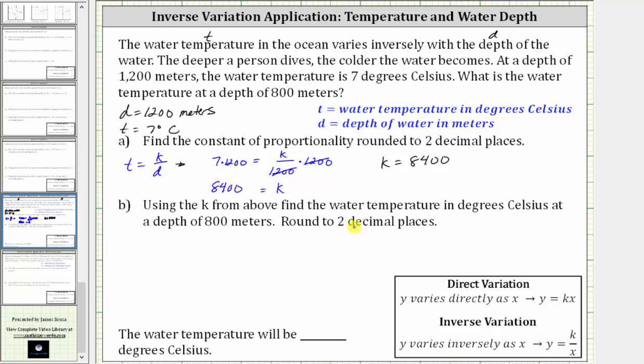Well, before we answer this question, let's write the inverse variation equation now that we know K is 8,400. We now know the temperature T must be equal to K, which is 8,400, divided by D, the depth. And now to determine the temperature at a depth of 800 meters,